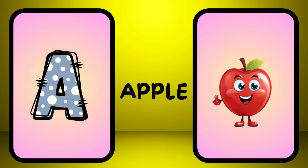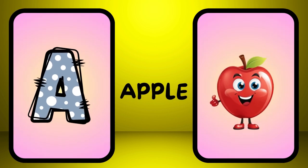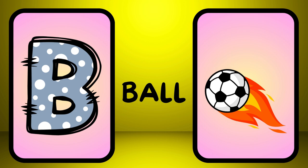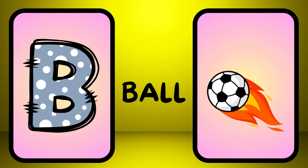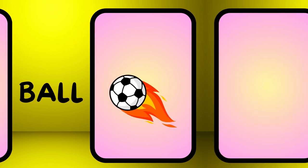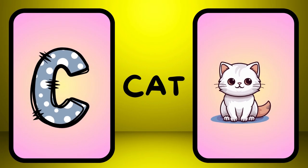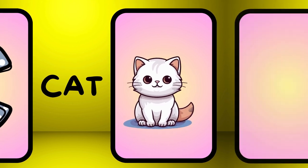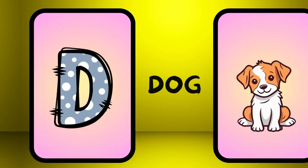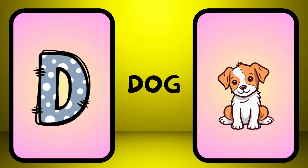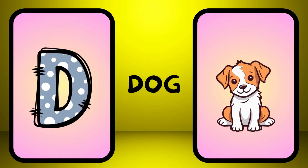A is for apple, a-a-apple. B is for ball, b-b-ball. C is for cat, c-c-cat. D is for dog, d-d-dog.